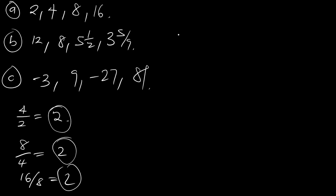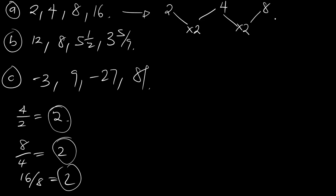That means for this first sequence, 2 times that common feature will give you the next value which is 4. This 4 times the common feature will give you 8, and 8 times the common feature will give you the next value which is 16.